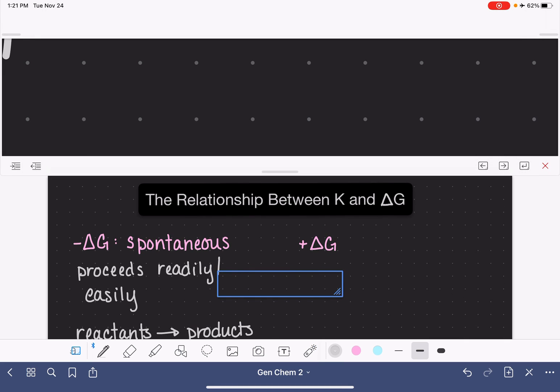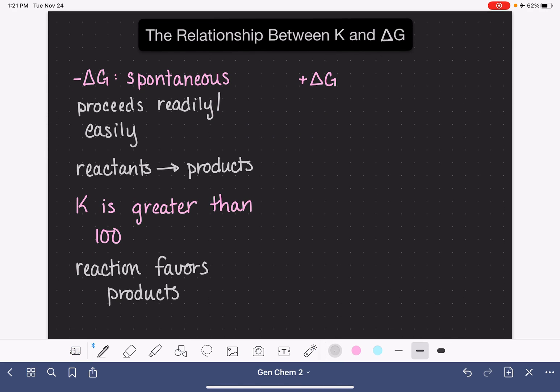Now, on the flip side of this, if we have a positive delta G, this means that the reaction is non-spontaneous.